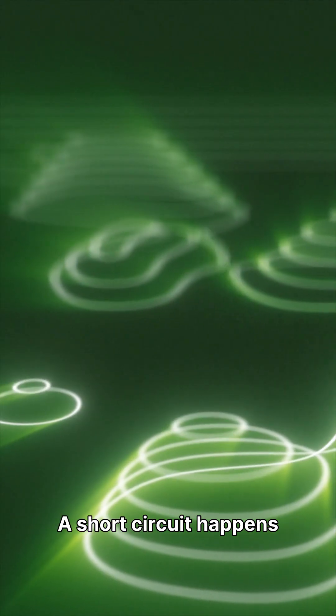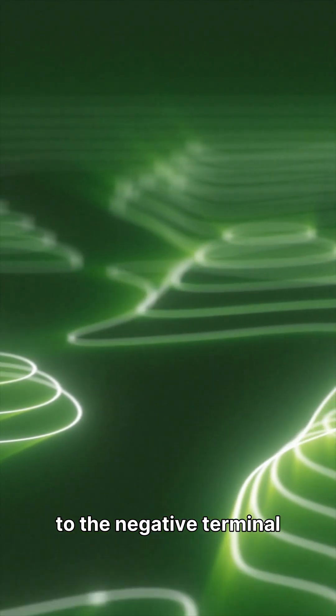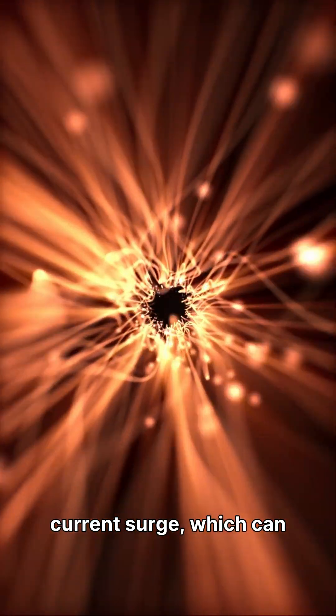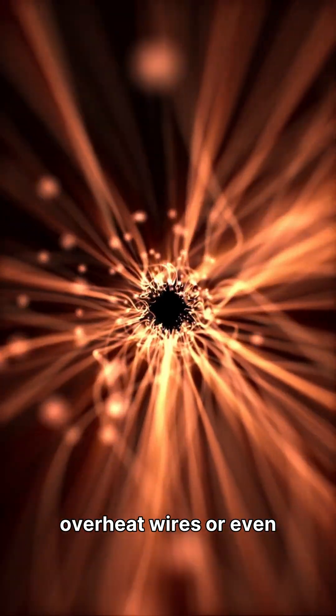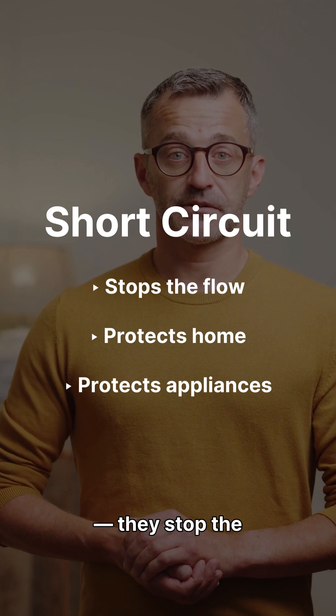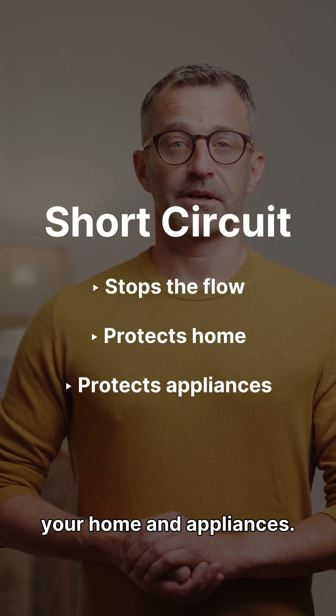A short circuit happens when the current takes a shortcut, moving directly from the positive to the negative terminal without passing through the load. This causes a huge current surge, which can overheat wires or even start a fire. That's why we use fuses and circuit breakers. They stop the flow instantly during a short circuit to protect your home and appliances.